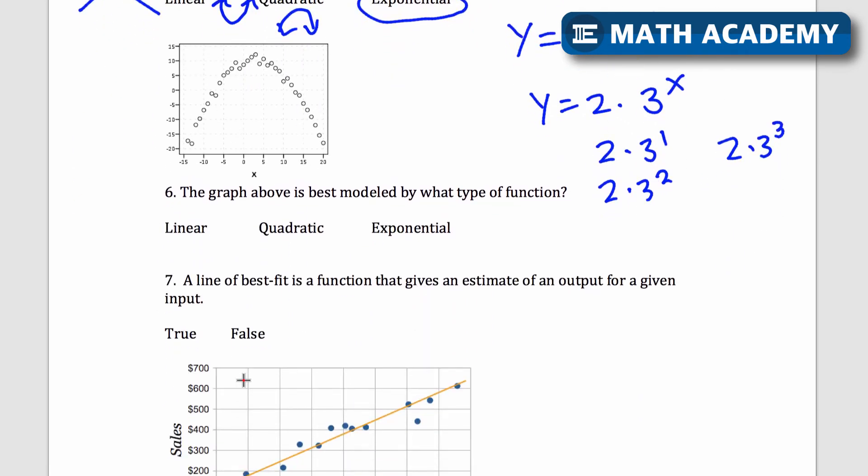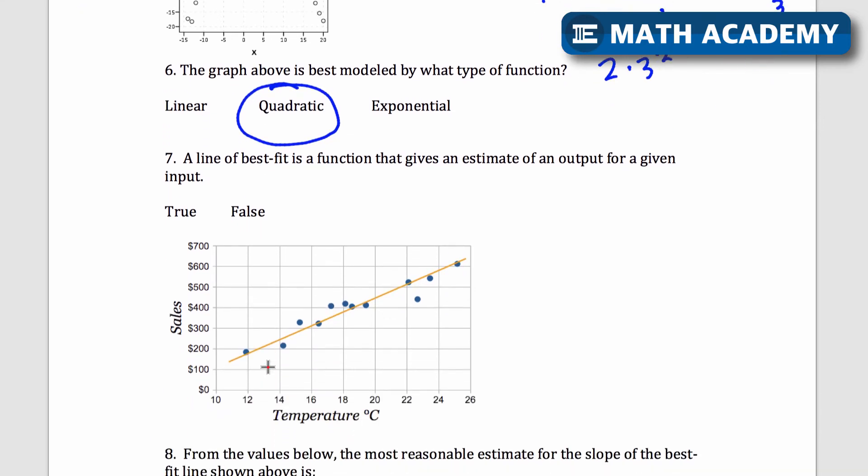Okay let's look at number 6. The graph above is best modeled by what type of function? Well that's that quadratic parabola shape, so that's going to be a quadratic. A line of best fit is a function that gives an estimate of an output for a given input, so is that true or false? We said that before, that we're just estimating what we get as the output based on what the input is. Okay so I'll say that one's true.